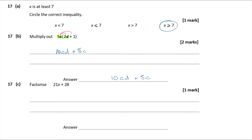Question 17c — factorise 21x + 28. The common factor of 21 and 28 is 7, since both are in the 7 times table. Taking 7 outside the bracket: 7 × 3x = 21x and 7 × 4 = 28. So the answer is 7(3x + 4).